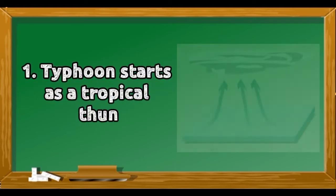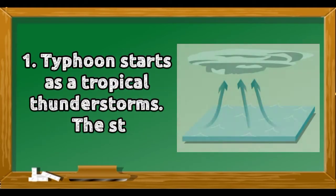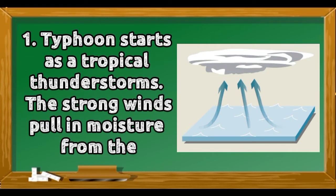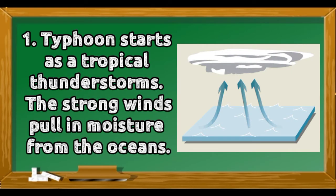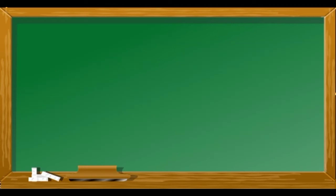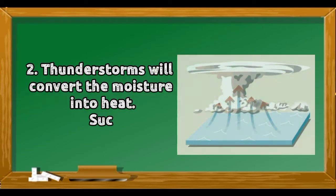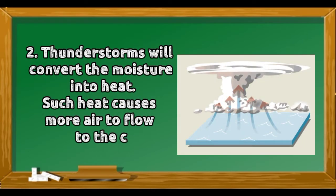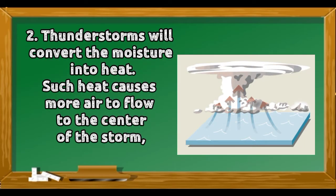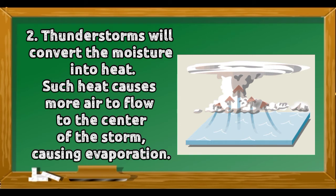A typhoon starts as tropical thunderstorms. The strong winds pull in moisture from the oceans. The thunderstorms then convert the moisture into heat, and such heat causes more air to flow toward the center of the storm.